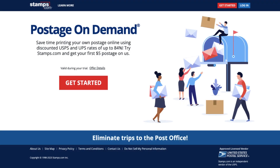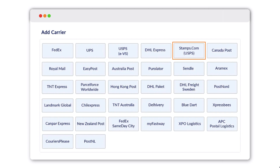Alternatively, consider using Stamps.com, an approved licensed vendor. To get started with Stamps.com, open the Plugin Hive Shipping app and select USPS.